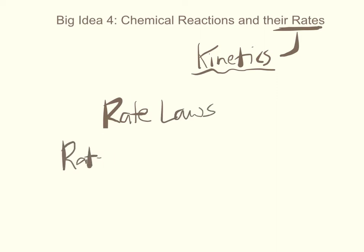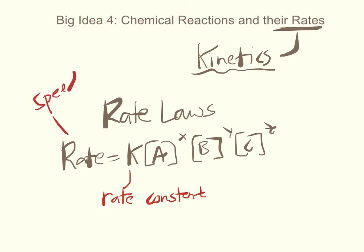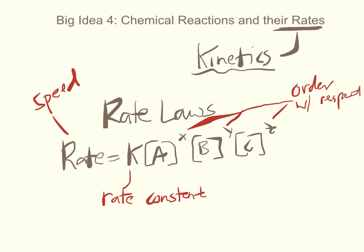The overall equation for a rate law is: rate = K times [A]^x times [B]^y times [C]^z, where K is the rate constant — and remember the units are not always the same, it depends on the rate law. The rate is the speed of the reaction, and each of these values X, Y, and Z are the order with respect to that compound.